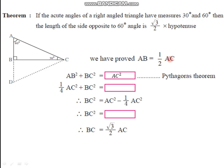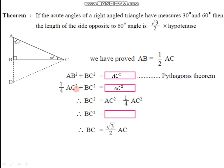Instead of AB we substitute one-half of AC, so we have (½AC)² plus BC² equals AC². This gives (1/4)AC² plus BC² equals AC². Transferring (1/4)AC² to the right-hand side, we get BC² equals AC² minus (1/4)AC², which simplifies to BC² equals (3/4)AC². Taking square roots on both sides, BC equals (√3)/2 times AC.